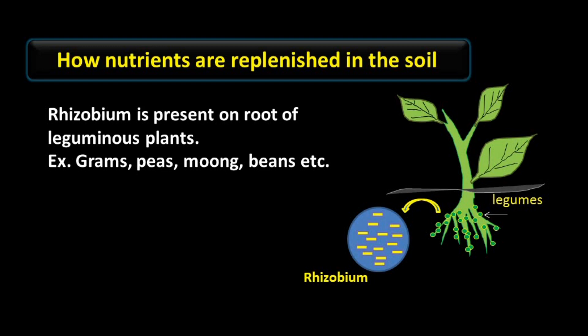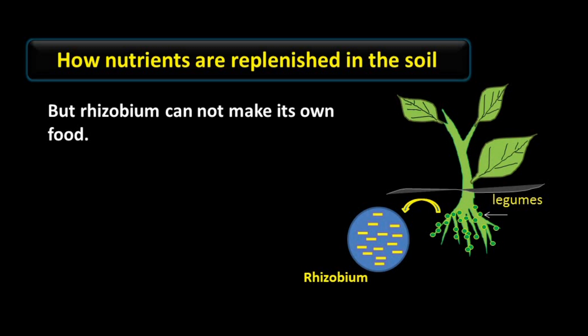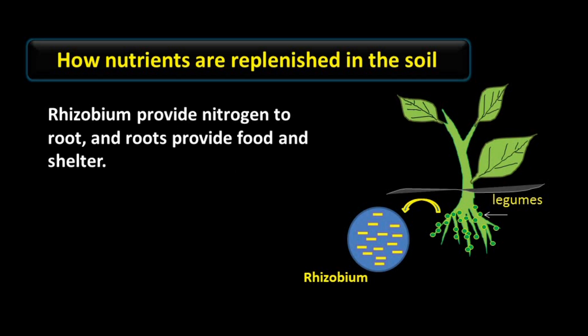Rhizobium is present on the roots of leguminous plants — for example, gram, peas, moong, beans, etc. On their roots, small rounded structures are formed, and inside these structures Rhizobium is present, helping in the fixation of nitrogen. Rhizobium bacteria can take nitrogen from the atmosphere and convert it into soluble form, but Rhizobium cannot make its own food, so it lives in the roots of leguminous plants in a symbiotic relationship. Rhizobium provides nitrogen to roots, and roots provide food and shelter to Rhizobium. Most pulses are obtained from leguminous plants.